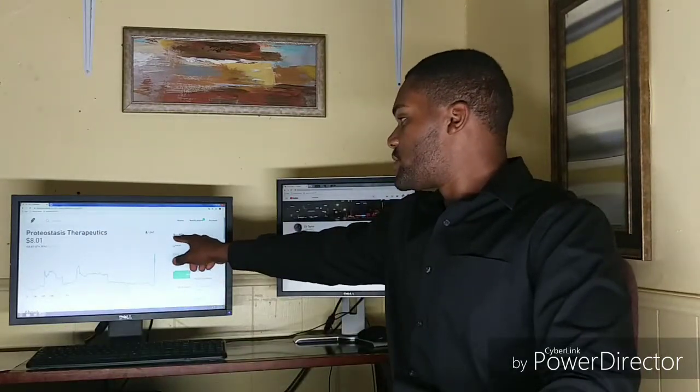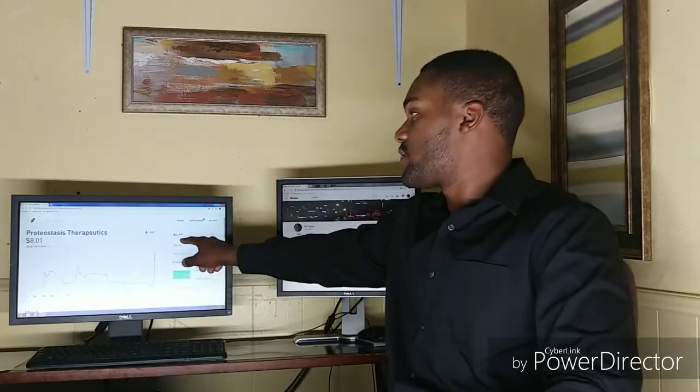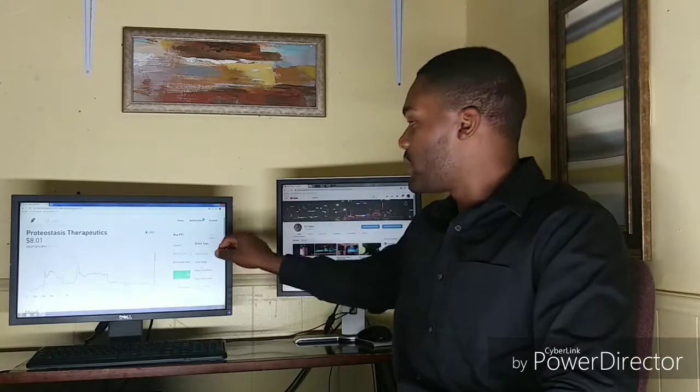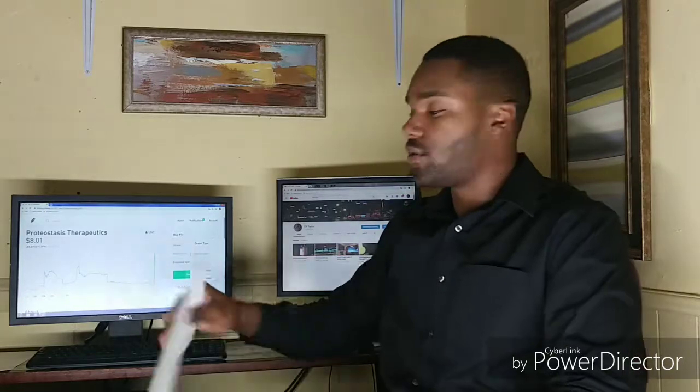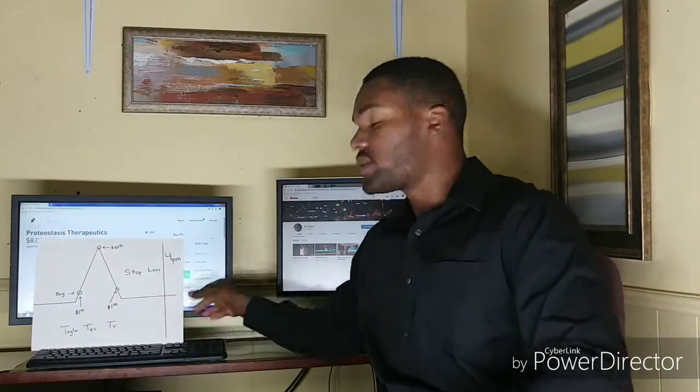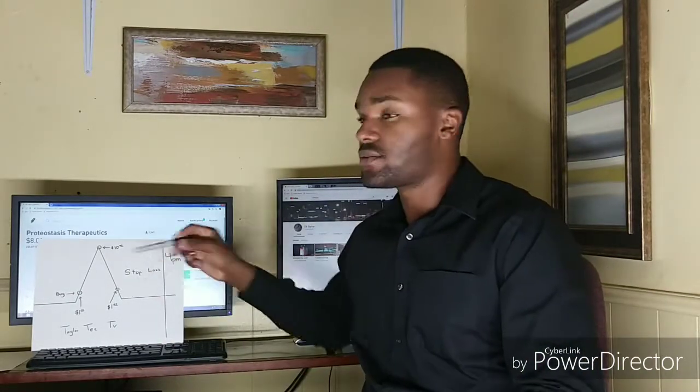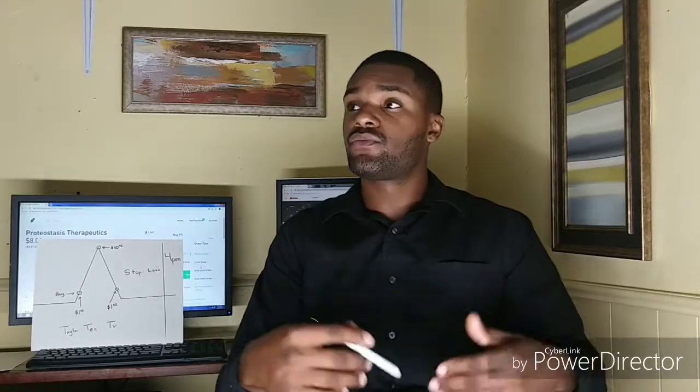Right here you can see next to 'Buy' - I'm getting ready to buy this therapeutic stock PTI - I click on the three dots next to it and I can select 'Stop Loss Order.' What the stop loss order does is, let's say you're working during trading hours: when the stock drops and gets back down to the original price you paid for it, it will cash out so you don't lose money.